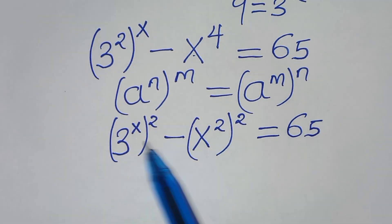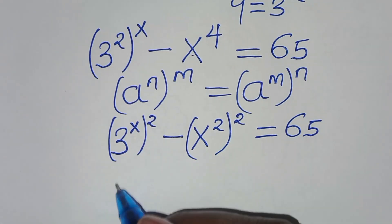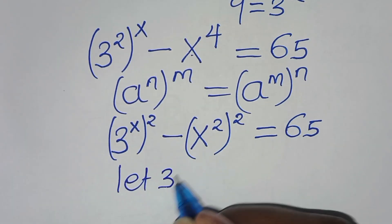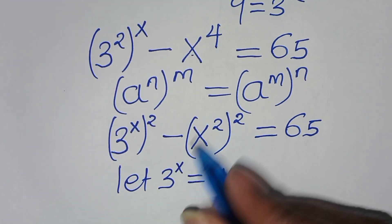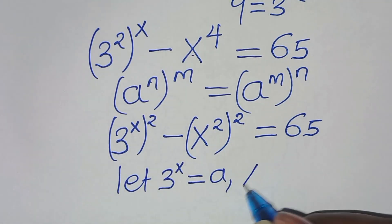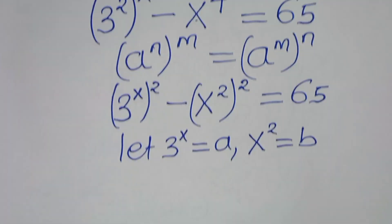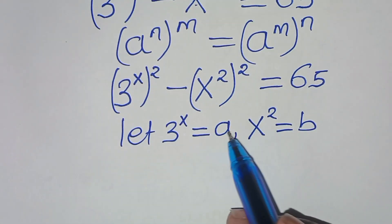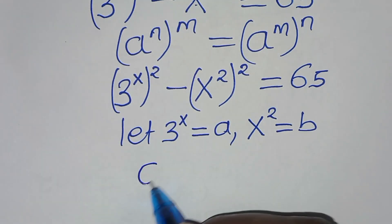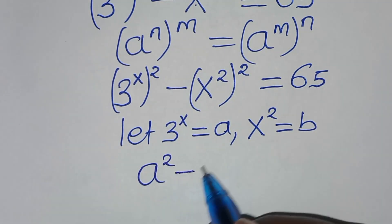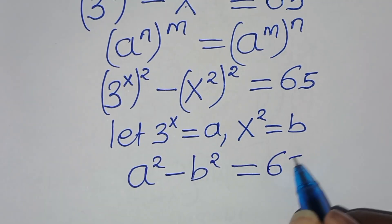Now, the next step from here, we can let 3 to the power of x be equal to a, and we can let x to the power of 2 be equal to b. So that here, if we substitute a and b into this equation, we have a to the power of 2, minus b to the power of 2, this is equal to 65.